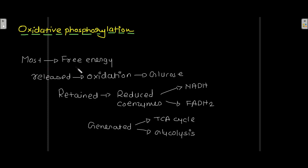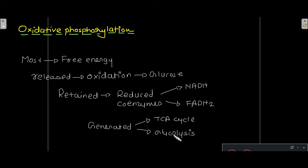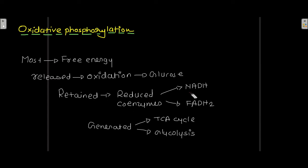Most of the free energy released during the oxidation of glucose into carbon dioxide is retained in reduced coenzymes NADH and FADH2, which are generated in the TCA cycle and glycolysis. So by doing oxidation of glucose, free energy is generated and that free energy is retained in NADH and FADH2.